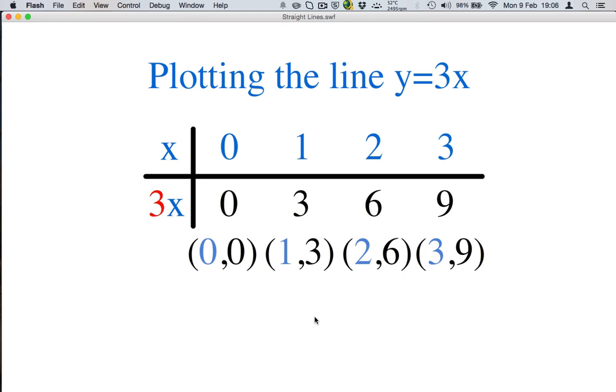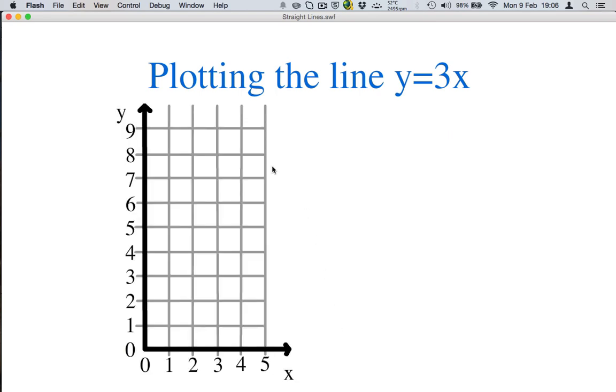Now that we have these coordinates we can plot them. Here's a suitably drawn axis with numbers on the x from 0 to 5 and from 0 to 9 on the y. Our smallest x value is 0 and our largest x value is 3 so the x axis is sufficient. For y our smallest is 0 and our highest is 9 so our y is sufficient for that as well.